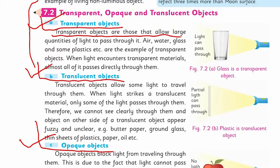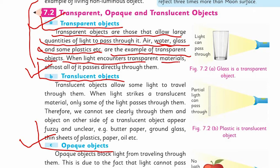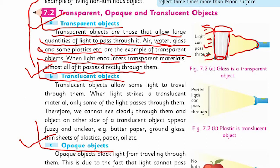Transparent objects are those that allow a large quantity of light to pass through them. For example, air, water, glass, and some plastics are examples of transparent objects. When light encounters transparent materials, almost all of it passes directly through them. The windscreen of a car is a good example — when you sit in a car, even small objects in front are easily visible because the windscreen is transparent.